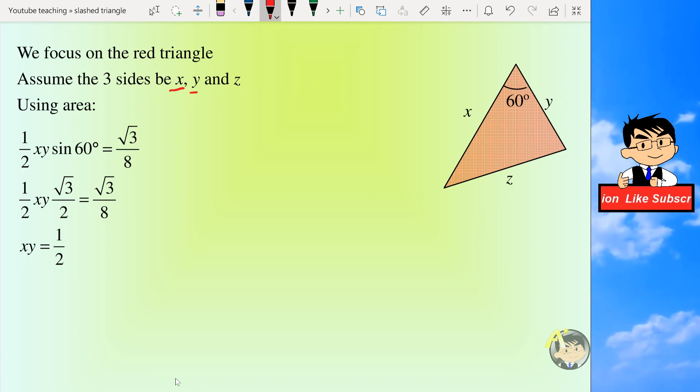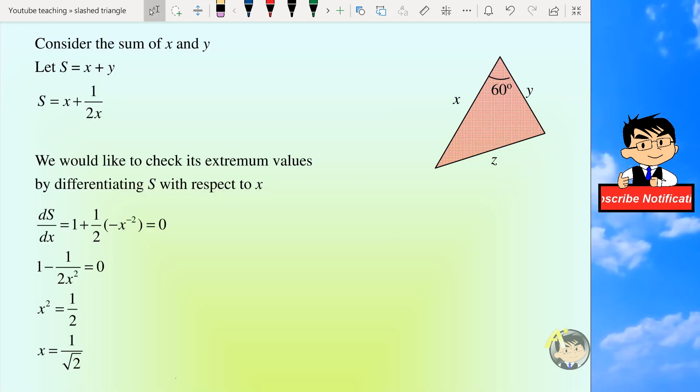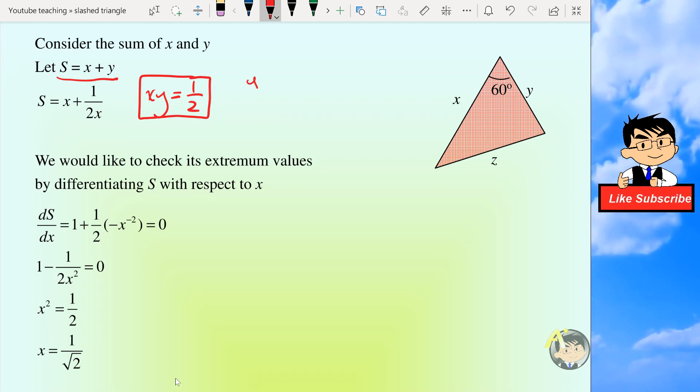We will focus again on the red triangle. We assume three sides to be x, y, and z. So using the area formula, we can easily get x times y to be half. Now we consider the sum of x and y first. Let s be x plus y, so we have the formula xy equals half. So we make y the subject and we will have 1 over 2x, and we can put it into this formula. And we would like to check its extreme values, so we will do it by differentiating s with respect to x.